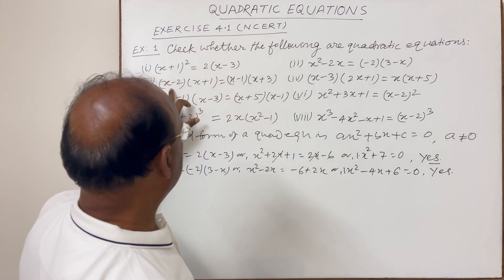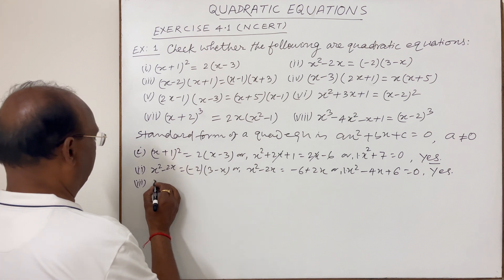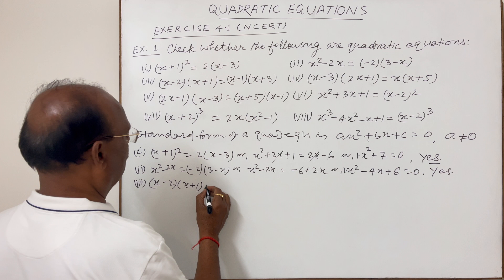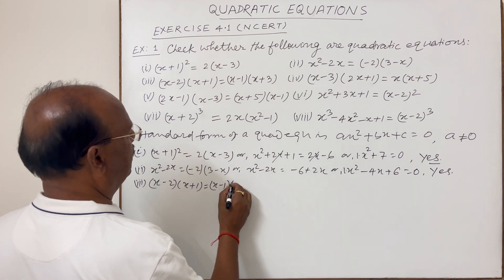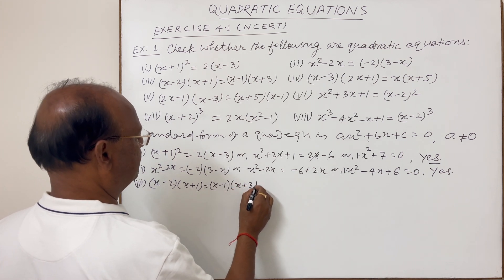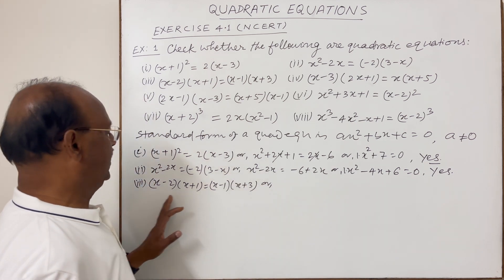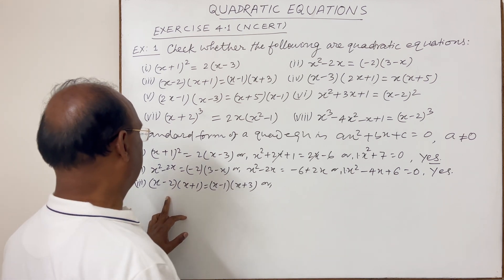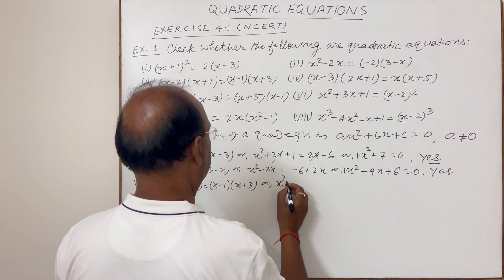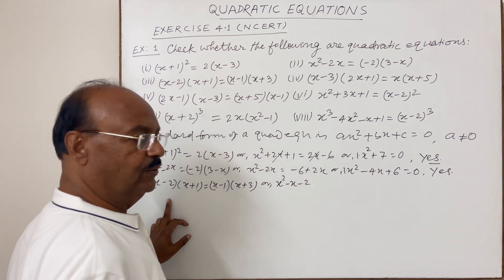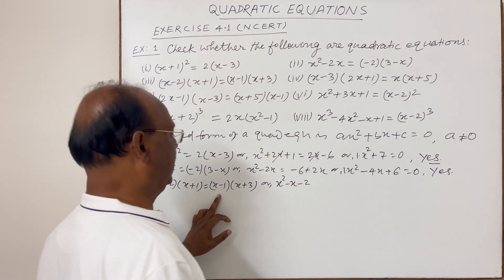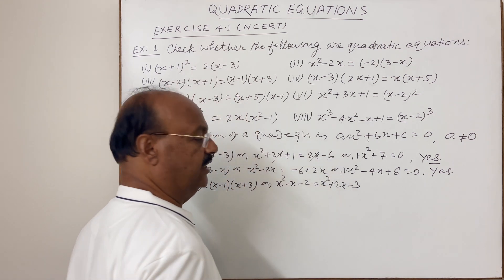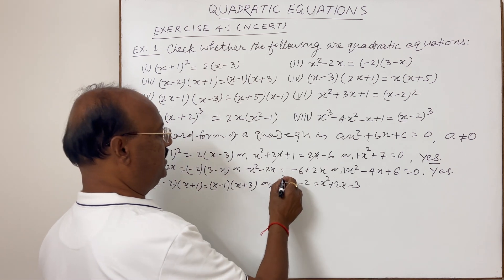Third equation: (x − 2)(x + 1) = (x − 1)(x + 3). Multiplying out the left-hand side gives x² − x − 2, and the right-hand side gives x² + 2x − 3. The x² terms cancel from both sides.